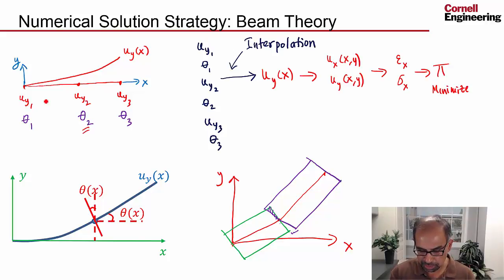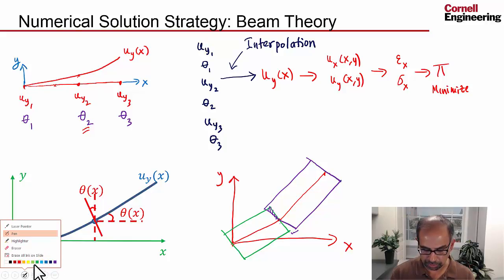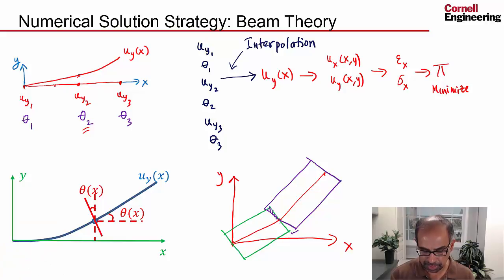And then, once we know these values, we can interpolate. In terms of these values, we can interpolate to find the value anywhere in between. So through an interpolation, you can construct... So let's say if this is this value, this would be constructed through an interpolation like that.